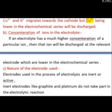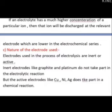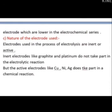The third factor is the nature of the electrode. There are two types: inert electrodes, such as graphite and platinum, which do not take part in the electrolytic reaction; and active electrodes, such as copper, nickel, and silver, which do take part in chemical reactions. If inert electrodes are used, electrolysis depends only on the first two factors. If active electrodes are used, they participate in the reaction and different products are formed.